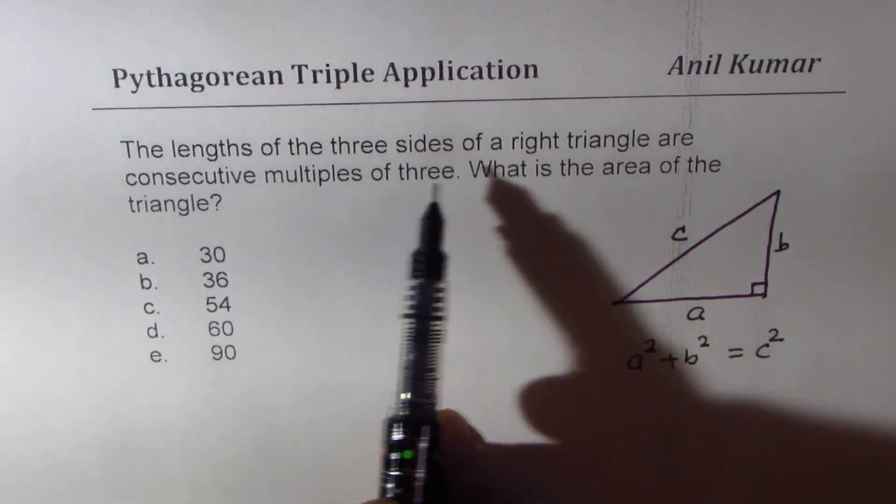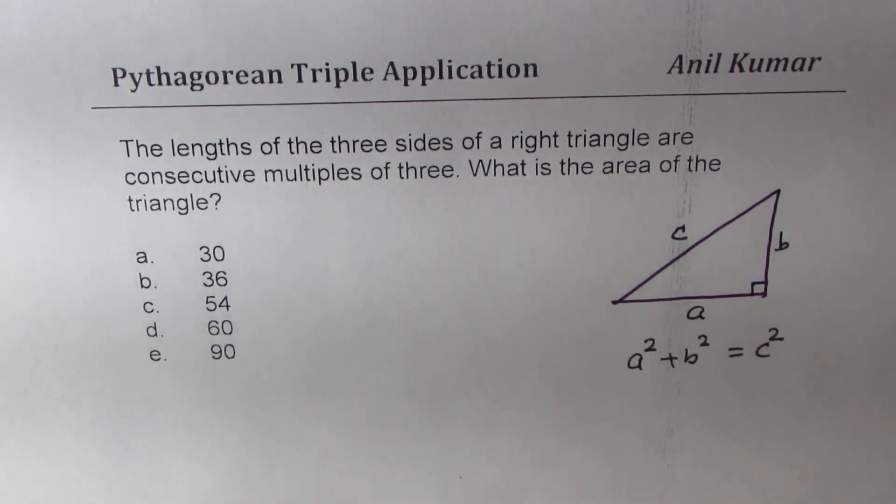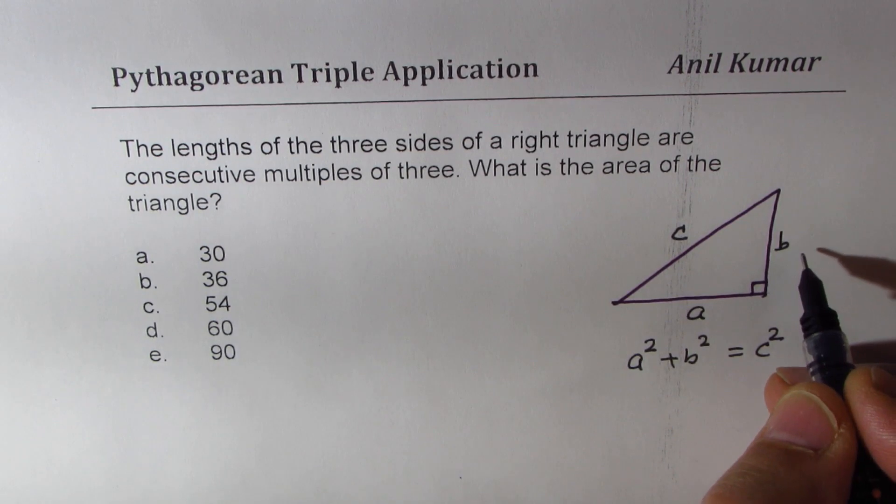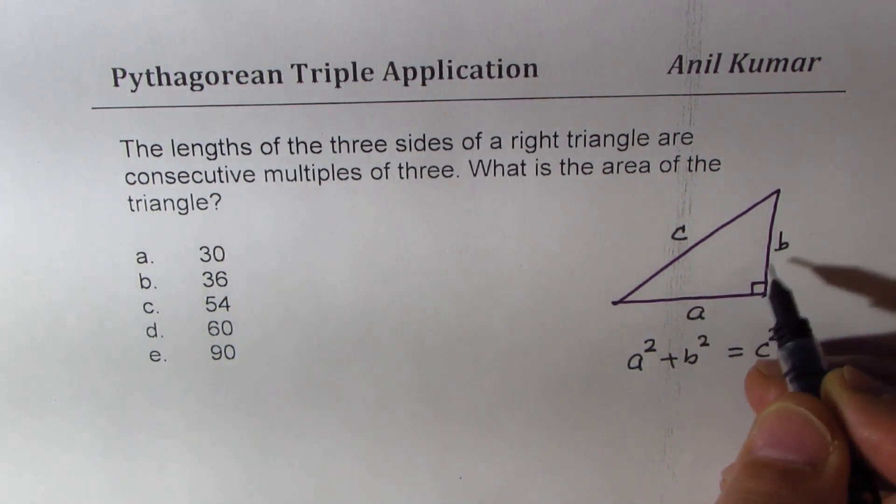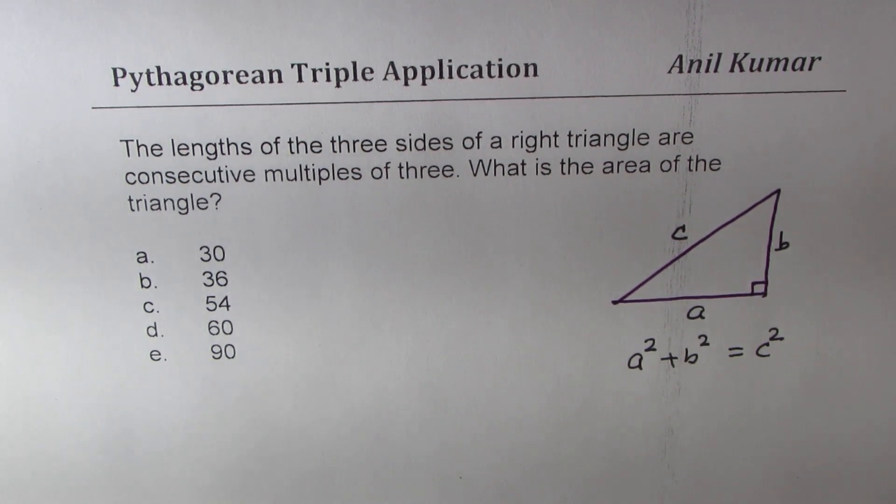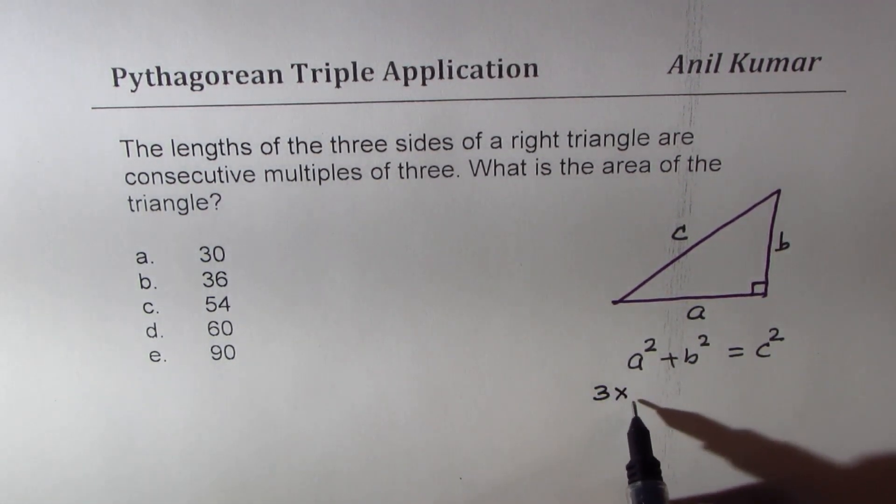Now, if you want three sides of a right triangle as consecutive multiples of three, it means what? That means if I take X as A, right, so the other two are multiples of three. So it should be three times X. So it could be, for example, it could be three X,